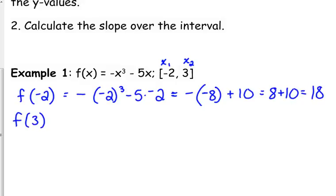f of 3, negative 3 cubed, minus 5 times 3, that gives us negative 27, minus 15, that is negative 42.